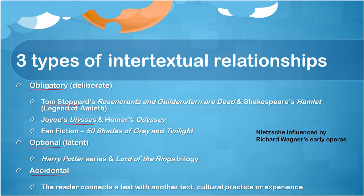Similarly, from the modernist period we can talk about Joyce's Ulysses, which has an intertextual relation with Homer's Odyssey. From the contemporary period, a lot of fan fiction can also be identified as an obligatory or deliberate kind of use of intertextuality. For example, Fifty Shades of Grey was originally written as fan fiction for the Twilight series.